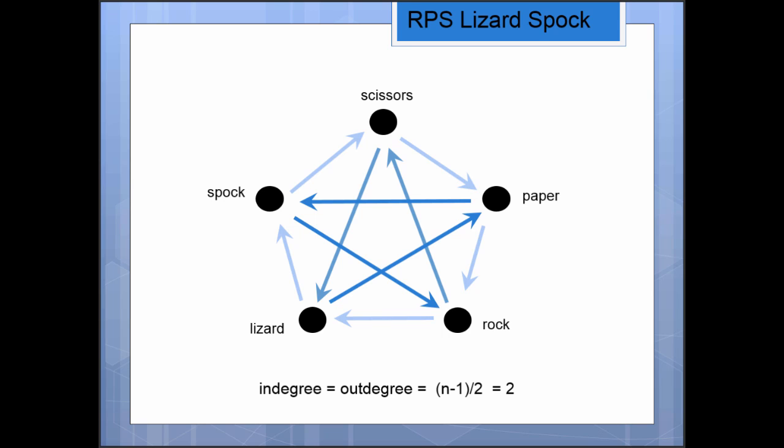Which is exactly what we're aiming for. n minus 1 other things divided by 2. That's what we get for our in-degree and our out-degree.